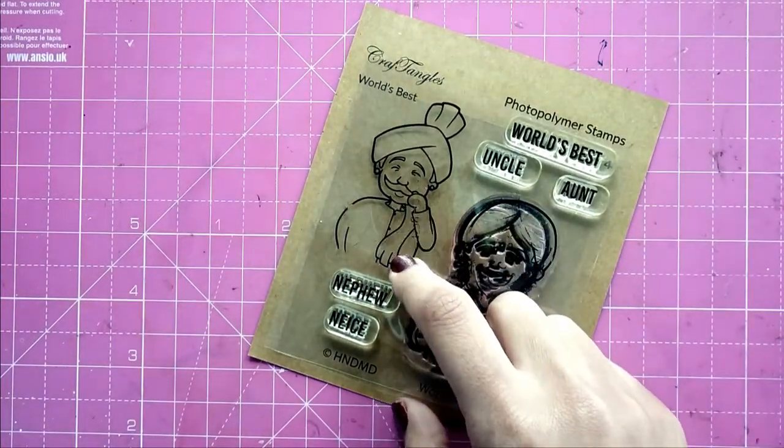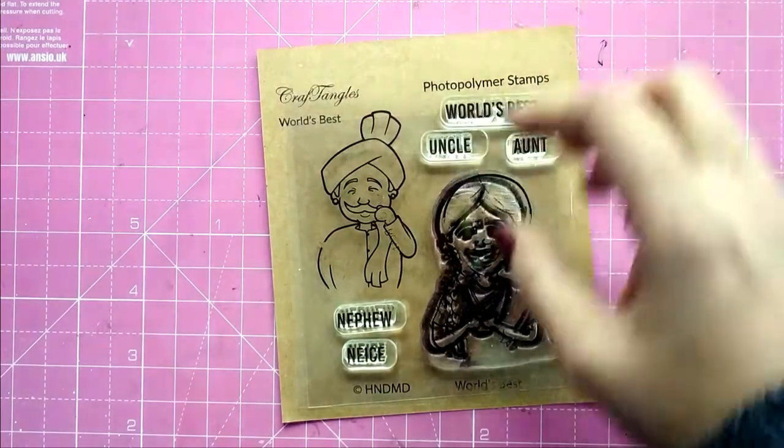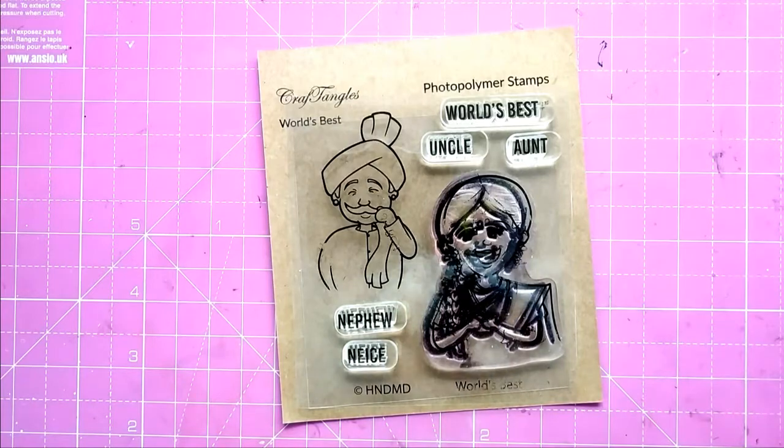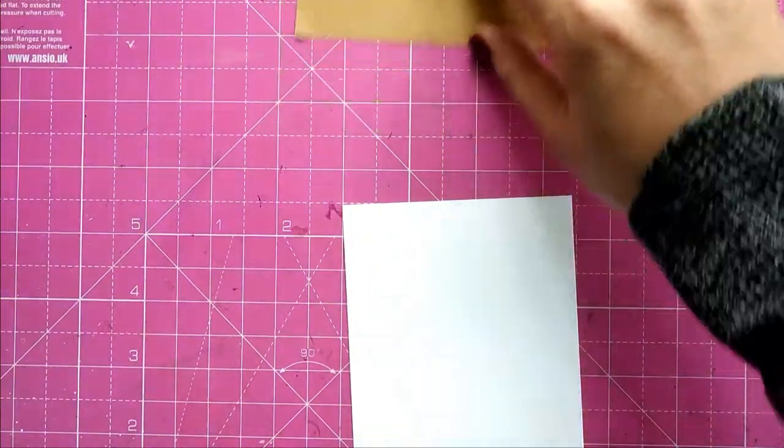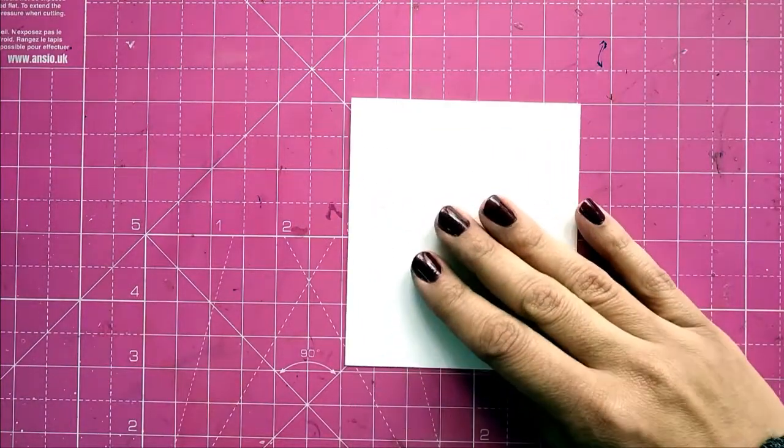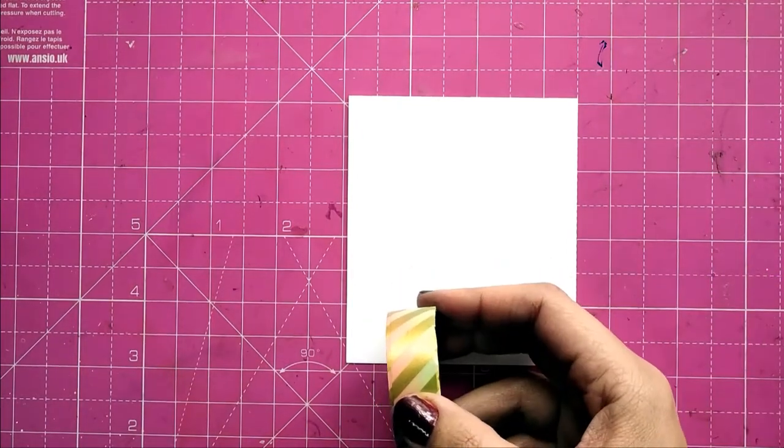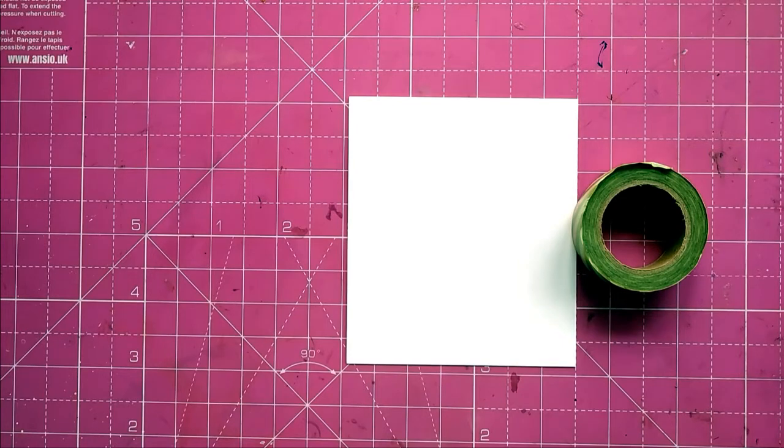The stamp set is called World's Best, and all the supplies that I'm using will be linked in the blog post and also in the description box below. So to get him ready for the Christmas Eve, we need to do some makeup. For that we will need paper, depending on the choice of your coloring medium. I'll be doing Copic coloring, so I take a piece of Neenah solar white. For masking, I'm taking washi tape—you could use masking paper or post-it note.